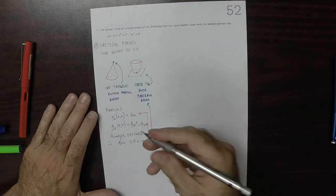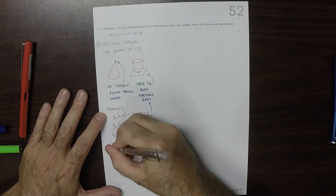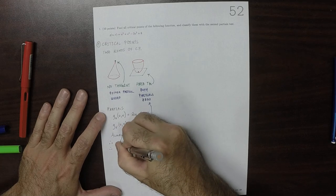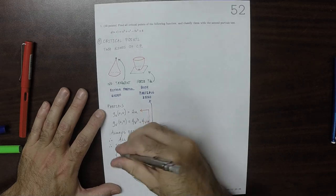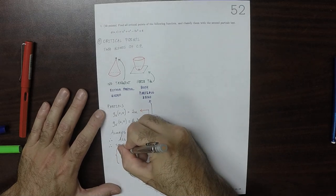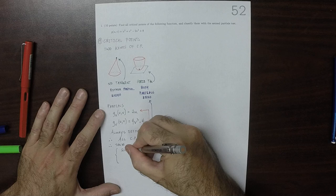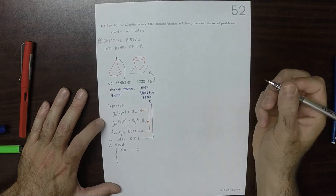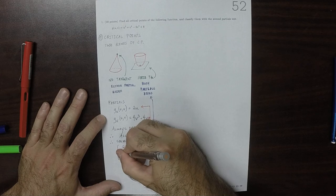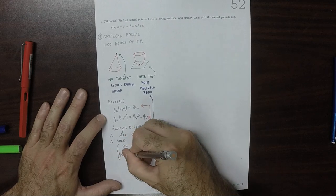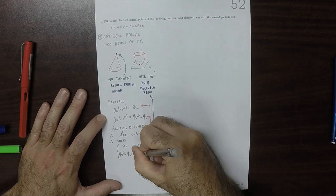So that means we need to solve the system of equations. 2U is equal to zero, and 4V cubed minus 4V is equal to zero.